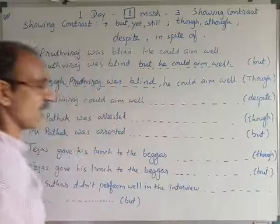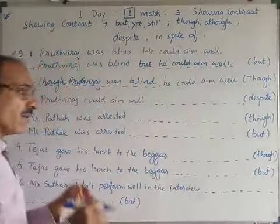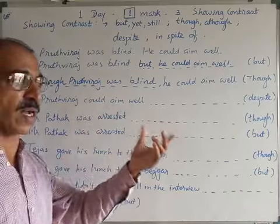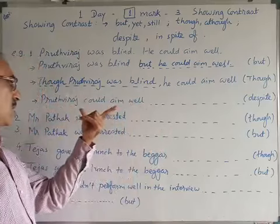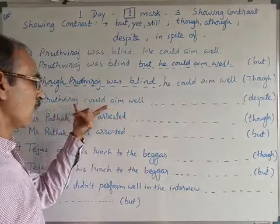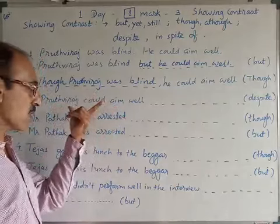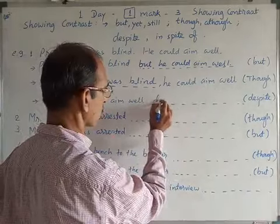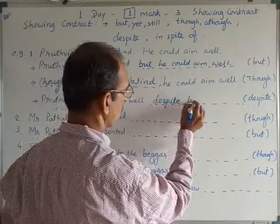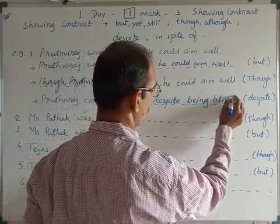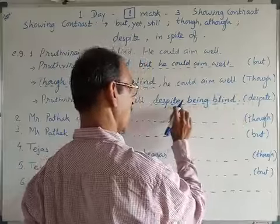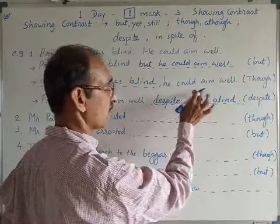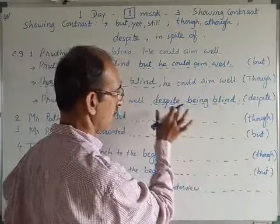He was blind but he could aim well. Using 'despite' or 'in spite of' to show contrast: 'in spite of being blind' uses a gerund (non-finite form). 'Despite he being blind' uses a finite sentence with subject and verb, whereas 'being blind' is a present participle non-finite verb form.